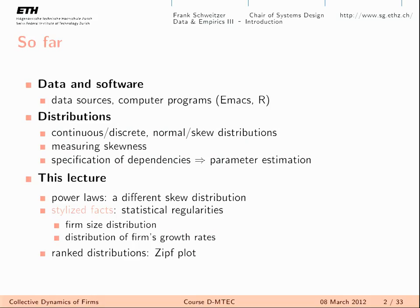We also talked about how to estimate parameters of the distribution — the two important parameters being mean and variance — calculated from the data, not assumed by the professor. Today we introduce another kind of skew distribution: last week was the log-normal distribution, today we talk about the power law. We then apply this to firm data, noting stylized facts: statistical regularities we observe, specifically the firm size distribution and the growth rate distribution.